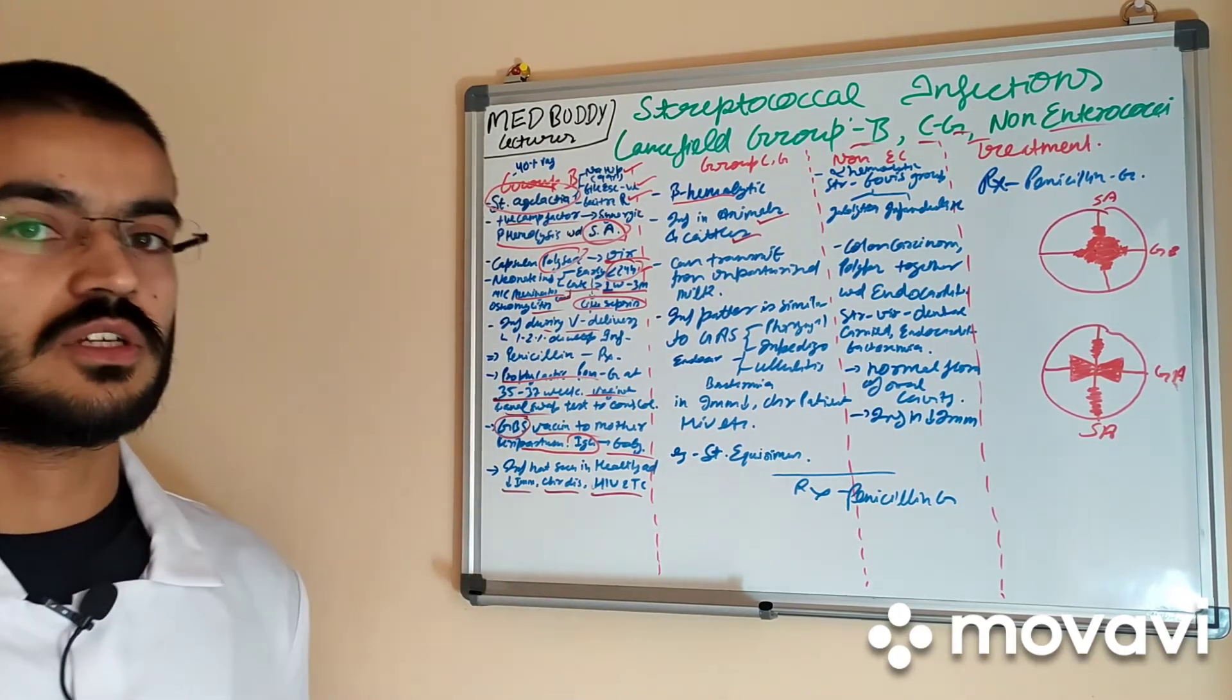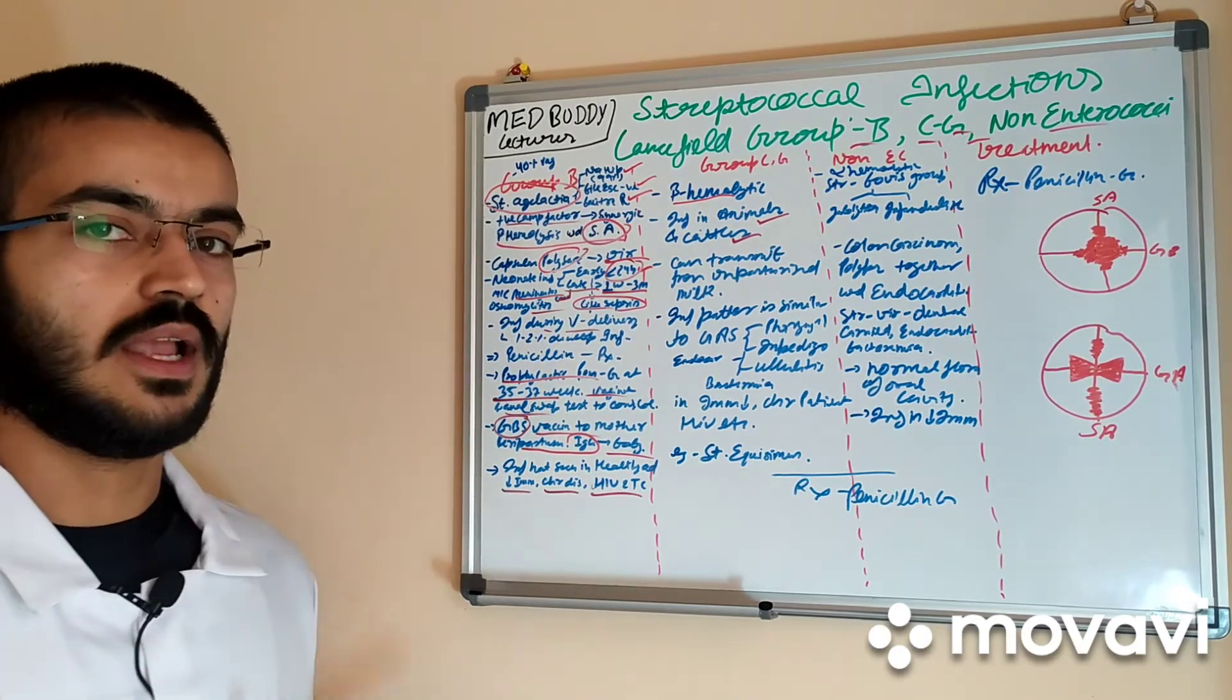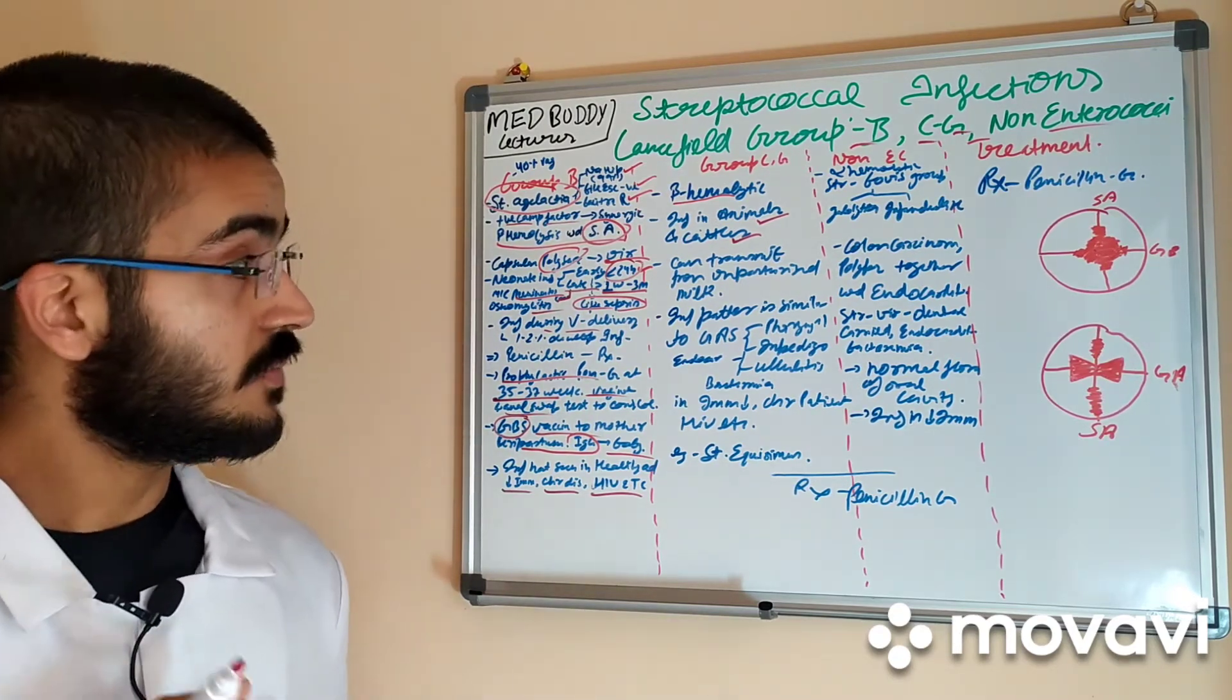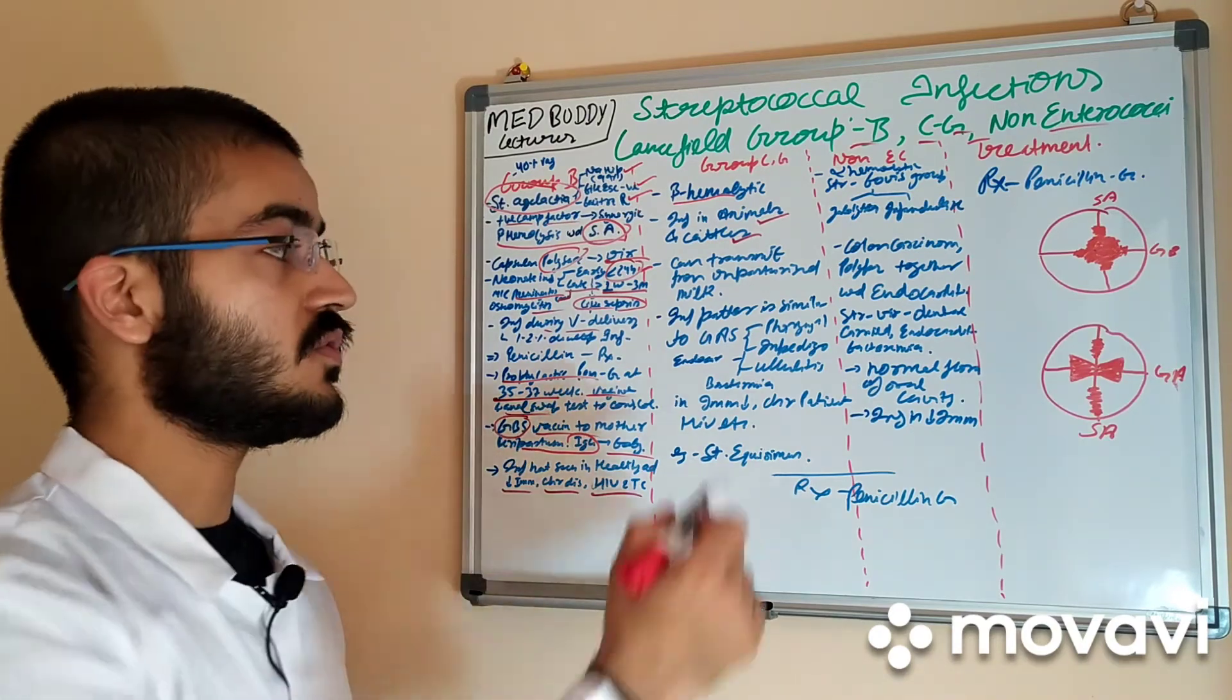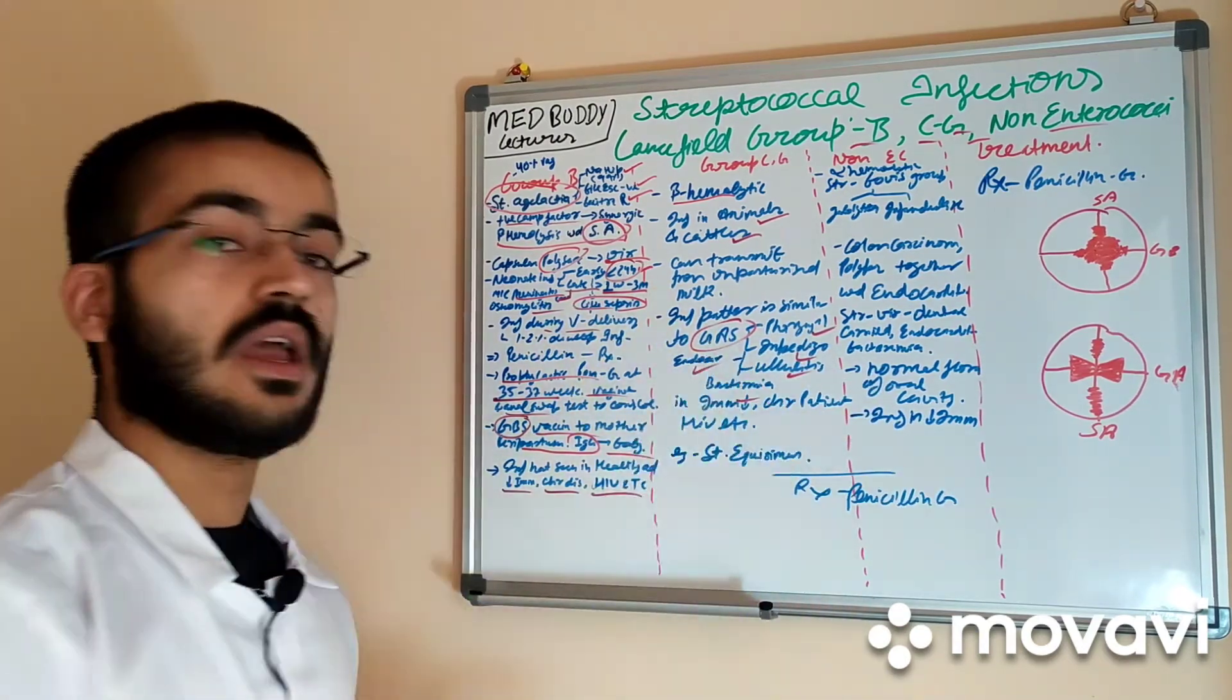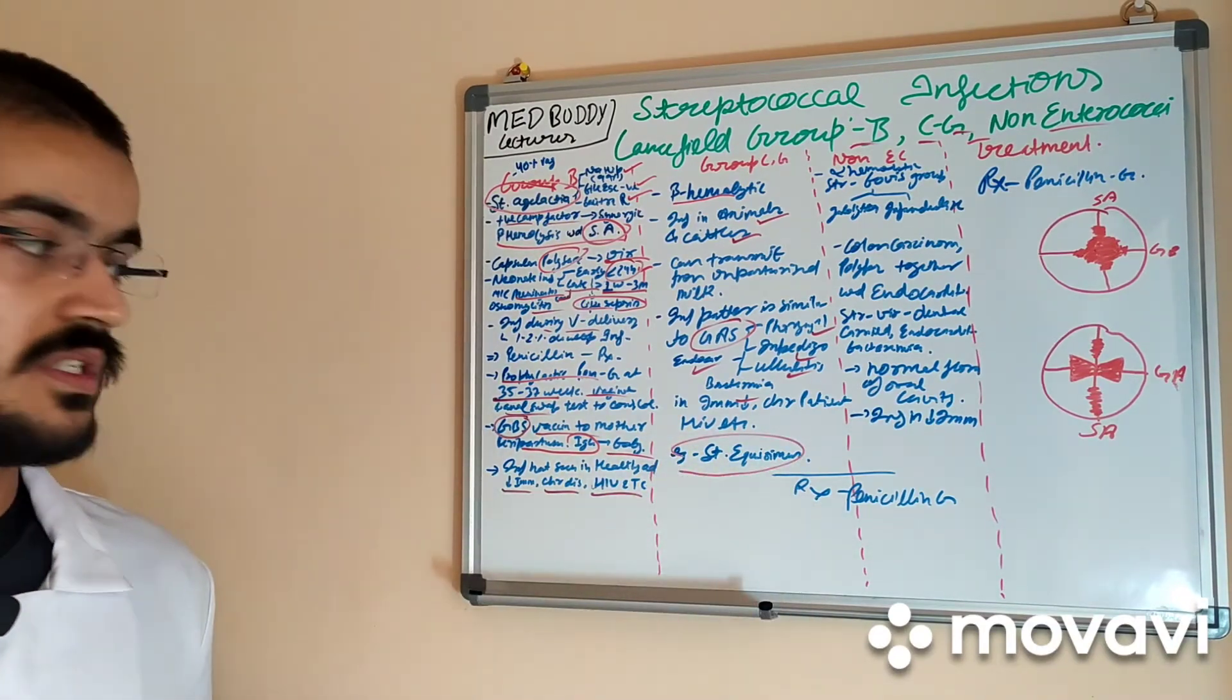And unpasteurized milk consumption can lead to infections not in normal healthy people but in immunocompromised and patient of chronic diseases. The pattern of diseases that it causes is very similar to group A streptococci: pharyngitis, impetigo, cellulitis, bacteremia, endocarditis. One of the example is Streptococcus equi-similis.